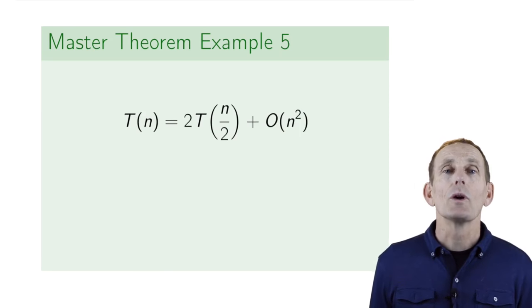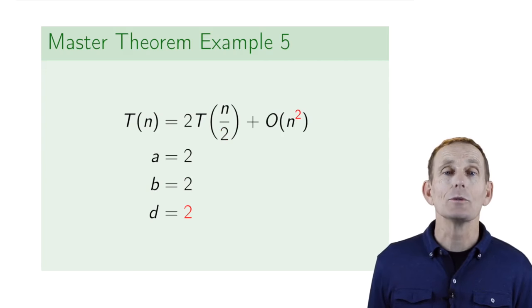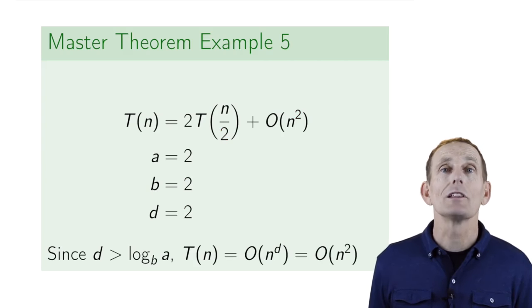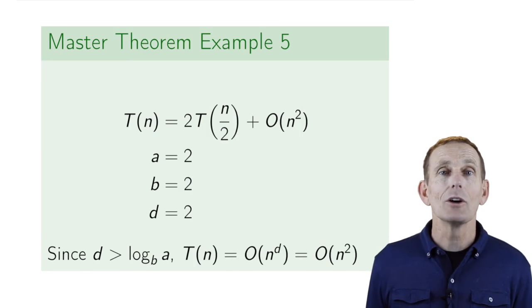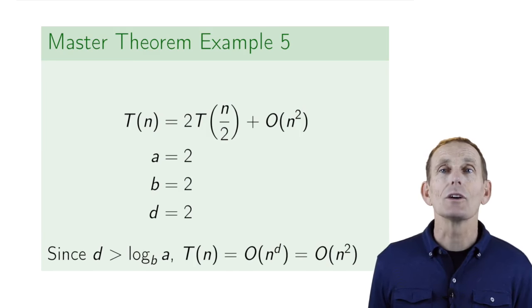And a final example, where we're actually in case 1. So here, a is 2, b is 2, and d is 2. So log base b of a is log base 2 of 2, which is 1. So d is now greater than log base b of a. We're now in case 1. T(n) equals big O of n to the d, which is big O of n squared.